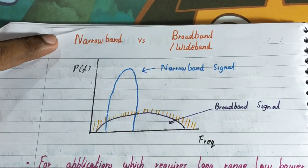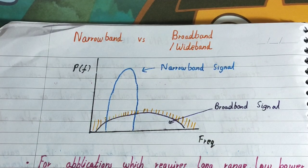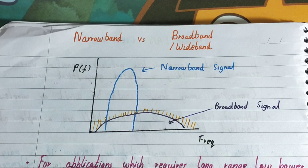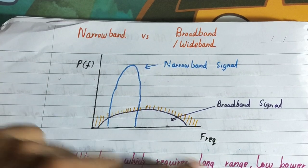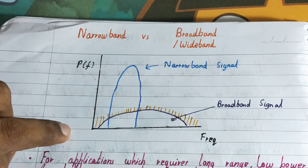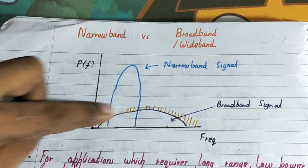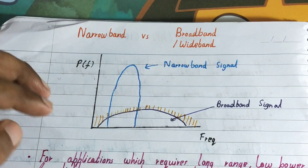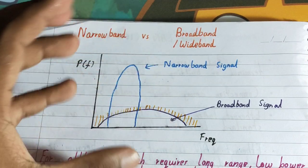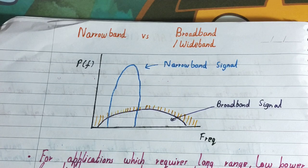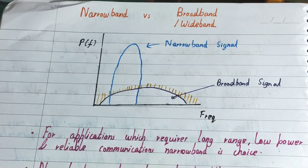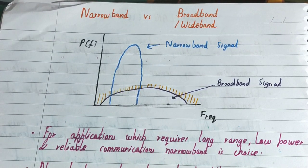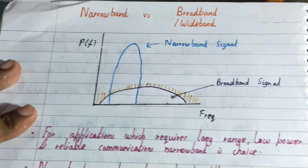In this video we'll be looking at narrowband versus broadband, also called wideband — these two terms refer to the same thing. This is a map of frequency and power. As you can see, broadband has a wide frequency range, while narrowband has a higher power but a very small bandwidth. We'll be discussing the comparison between broadband and narrowband.